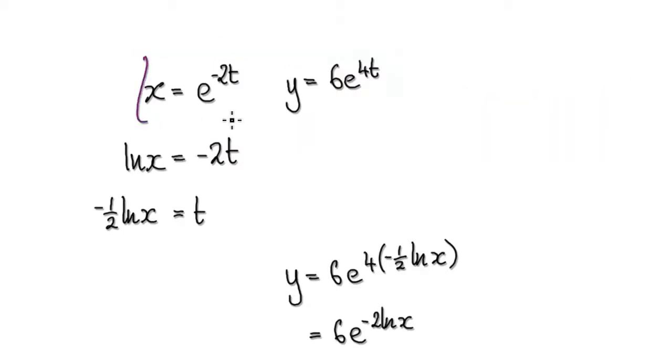The trick is to make t the subject, and then you can put this into the t here, so that would eliminate the t. So let's start.